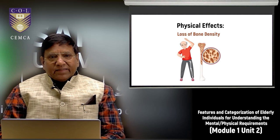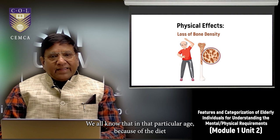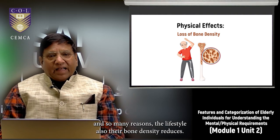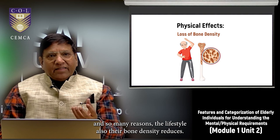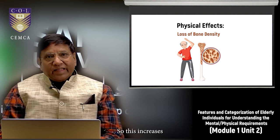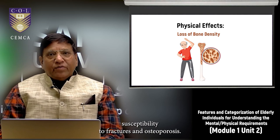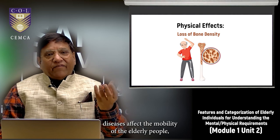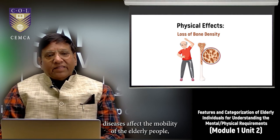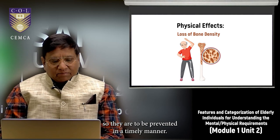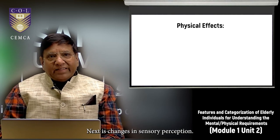The second physical effect is loss of bone density. Due to diet, lifestyle, and other reasons, bone density reduces in old age, increasing susceptibility to fractures and osteoporosis. These diseases affect the mobility of elderly people and need to be prevented in a timely manner.